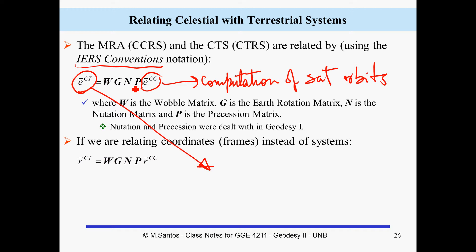We have applied the precession matrix, the notation matrix, the Earth notation matrix, and the polar motion matrix. These are the orbits — actually vectors — and if you are relating directions, this expression here is more for astronomical positioning, while this one is what will be used in satellite positioning.